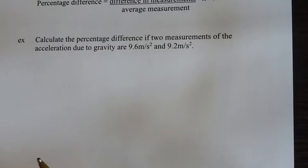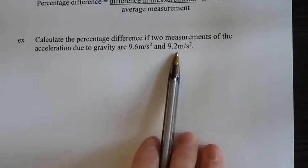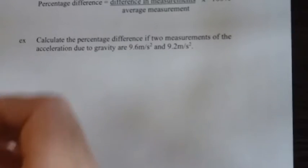Calculate the percentage difference if two measurements of acceleration due to gravity are 9.6 and 9.2 meters per second squared. So I'm looking for the percent difference.